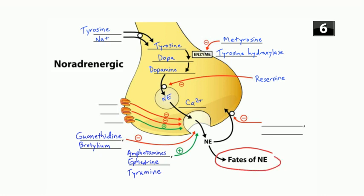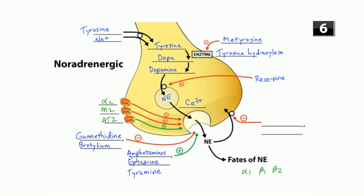Norepinephrine can bind to postsynaptic adrenergic receptors — the alpha-1, beta-1, or beta-2 receptors. It could also bind to presynaptic alpha-2 autoreceptors; alpha-2 stimulation inhibits further norepinephrine release. The M2 muscarinic receptor also inhibits norepinephrine release — if parasympathetic muscarinic activity is occurring, it inhibits norepinephrine. The angiotensin-2 receptor stimulates norepinephrine release.